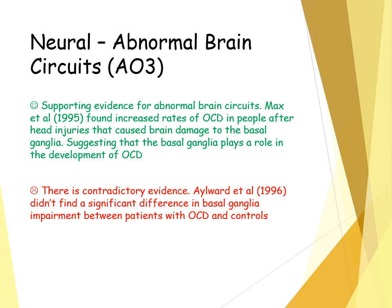We should perhaps look at an interactionist approach, because the basal ganglia doesn't seem to be the sole cause and concordance rates aren't 100%, suggesting an environmental viewpoint should also be explored. This connects to the nature and nurture debate — this explanation is solely from the nature viewpoint whereas nurture should also be considered. You could also mention that the biological approach is highly scientific — brain scans and specific measurements of neurotransmitter levels can be used — establishing scientific credibility.